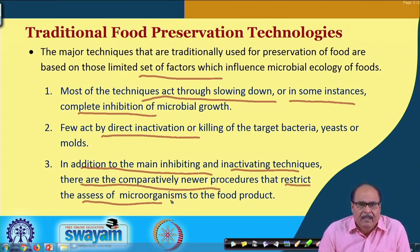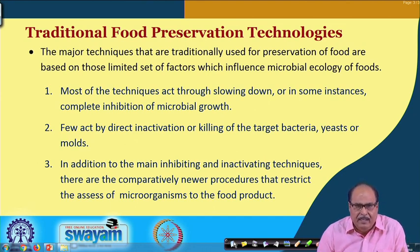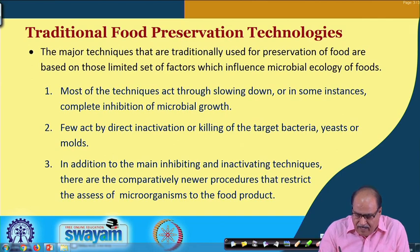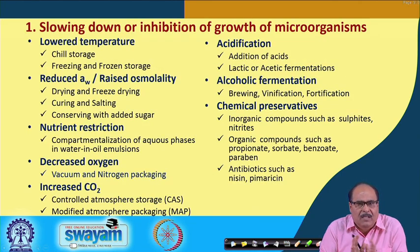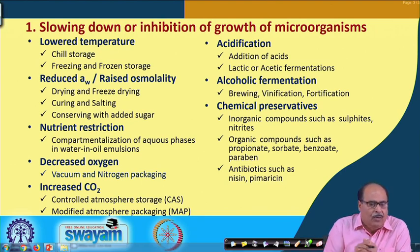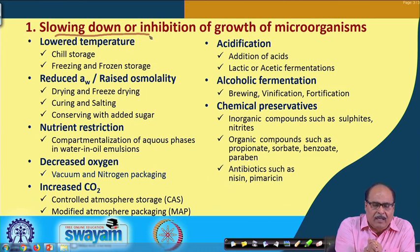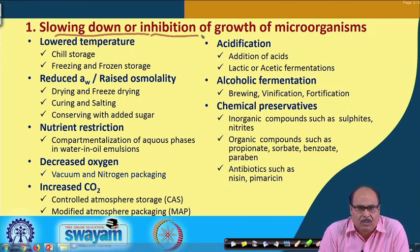Accordingly, all food processing technologies being used currently as well as from ancient times can be broadly classified into three major categories. Category one is those set of technologies that work on the principle of slowing down or inhibition of the growth of microorganisms.